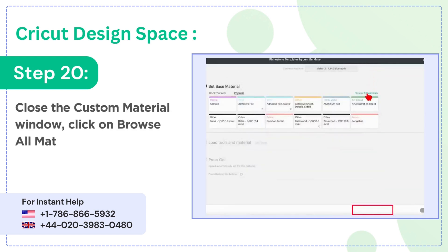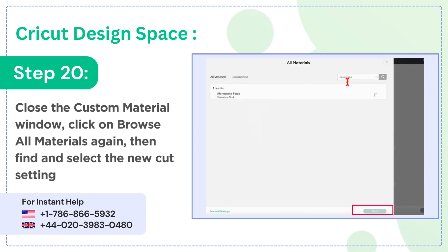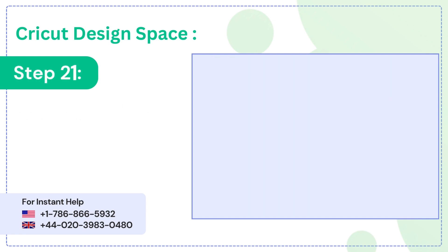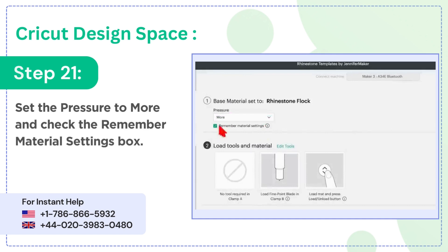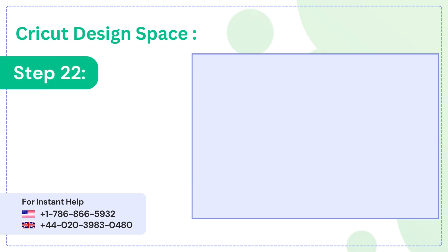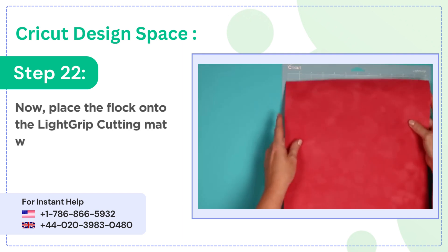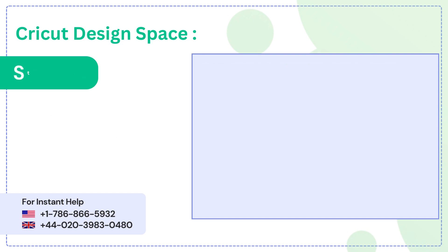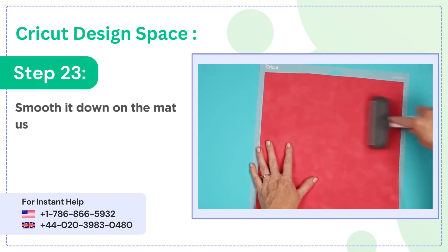Step 20: close the custom material window, click on browse all materials again, then find and select the new cut settings and click done. Step 21: set the pressure to more and check the remember material settings box. Step 22: now place the flock onto the light grip cutting mat with the liner side down on the mat. Step 23: smooth it down on the mat using a brayer.